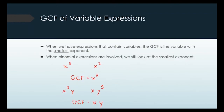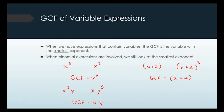You can also have binomial expressions, like (x plus 2) and (x plus 2) cubed. You still look at the smallest exponent, treating the whole expression in parentheses as a unit. They both have (x plus 2) in common, so the GCF is just (x plus 2) with an exponent of 1 — the second set has three of them while the first has only one.